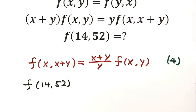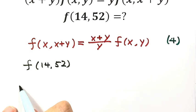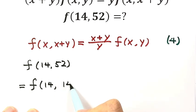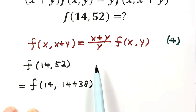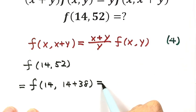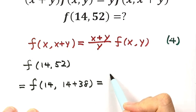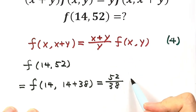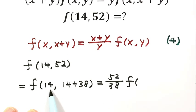We may use the given identities to solve this. First, we want to use Identity 4. We rewrite 52 as 14 plus 38, so x=14 and y=38, meaning 52 is x plus y. Applying Identity 4: f(14, 52) equals (52/38) times f(14, 38).